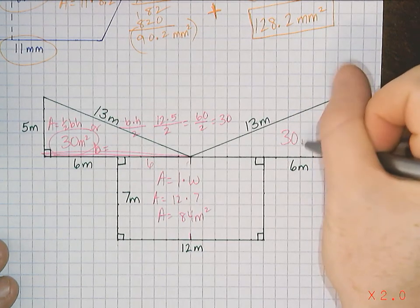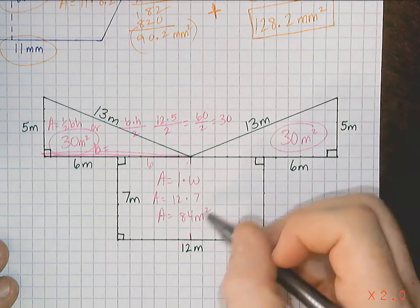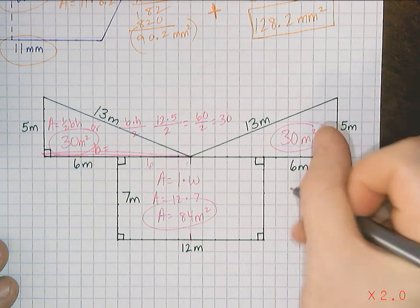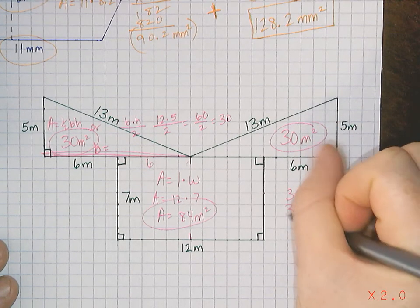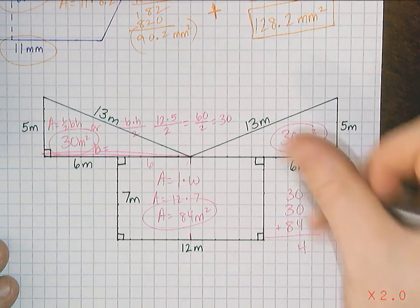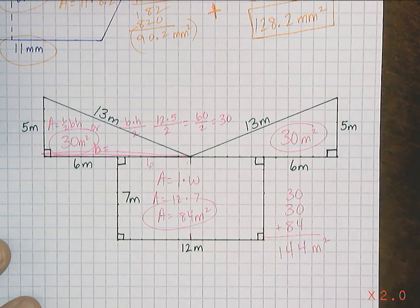And this is 30 meters squared because it's the same triangle, just flipped over, just reflected. What do you do with those three areas? How do you find the total area? You add them all up. 30 plus 30 plus 84 should get you 144 meters squared.